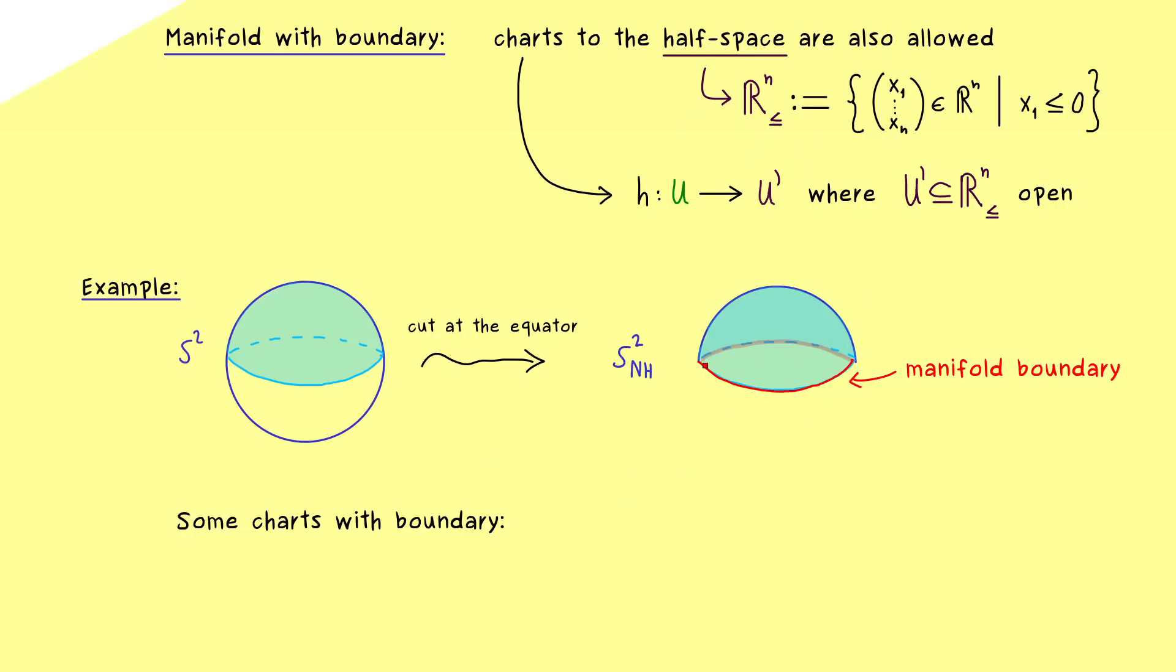And there I should also see that a single chart is not enough, because the boundary here is a circle, but the boundary in the half-space is a line that stretches to infinity. So, in order to get homeomorphisms, we have to split this hemisphere again.